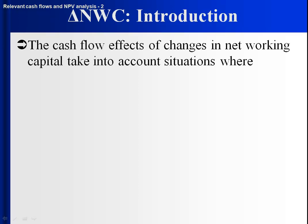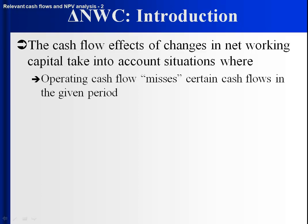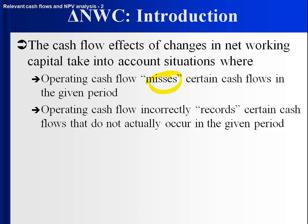The reason we want to take this into account is because there are cases where a couple of things can happen. First, operating cash flow misses some cash flows — we're trying to capture everything associated with operations and sometimes operating cash flow misses it. Second, sometimes operating cash flow incorrectly records certain cash flows that don't actually occur in a given period — it counts them in one period when the cash flow actually takes place in a different period. By incorporating the changes in net working capital, we can essentially straighten out those types of situations.